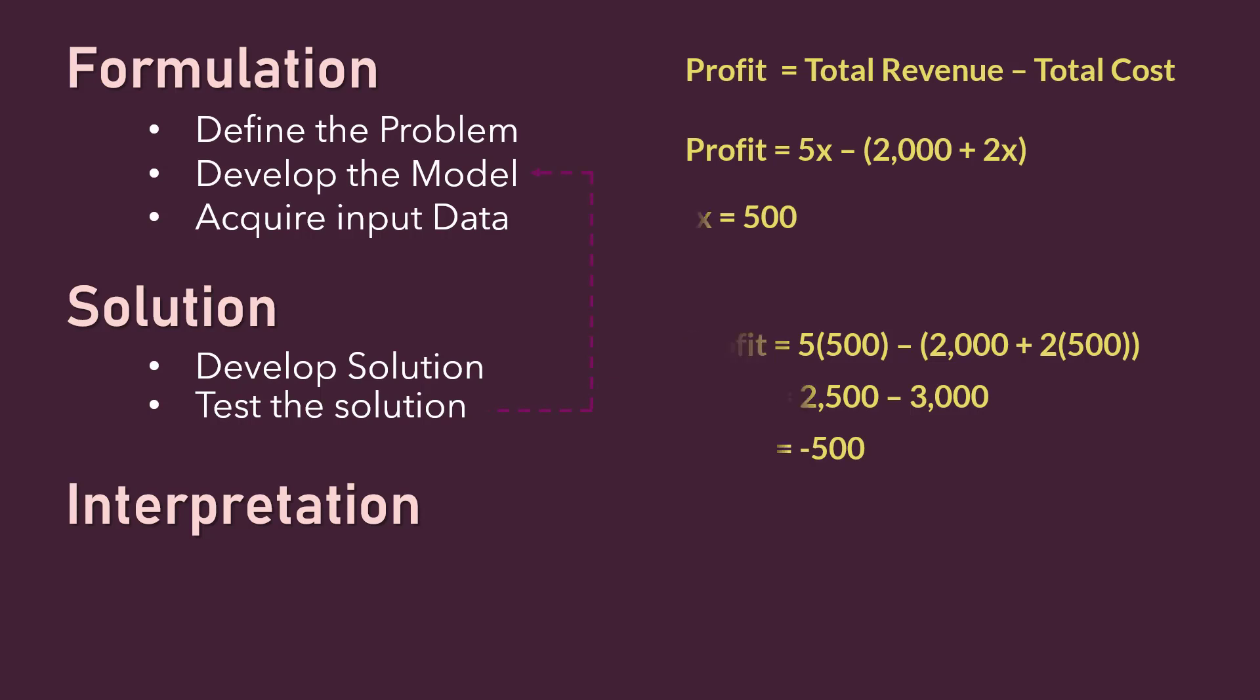Let us tweak the model slightly by increasing the selling price per unit to $6 and change the input data to produce, say, 800 units. Then our profit will be $1,200. If that meets the objective, then we can move on to interpretation.